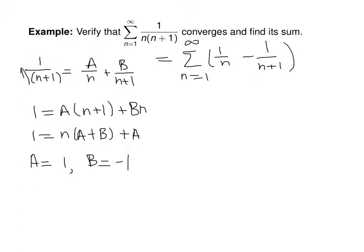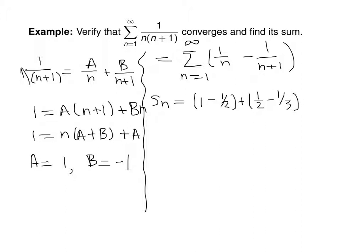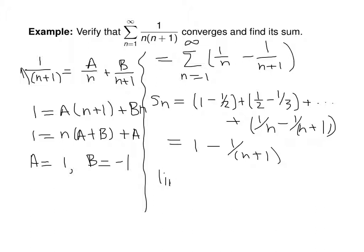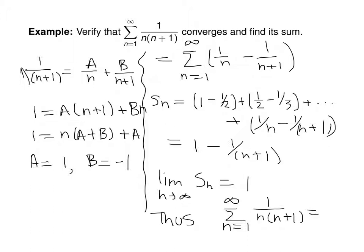Let's find an expression for the nth partial sum. S sub n equals 1 minus 1 half plus 1 half minus 1 third, and so on, plus 1 over n minus 1 over n plus 1, which collapses to 1 minus 1 over n plus 1. The limit as n goes to infinity of s sub n equals 1, and thus the sum from n equals 1 to infinity of 1 over n times n plus 1 is also equal to 1.